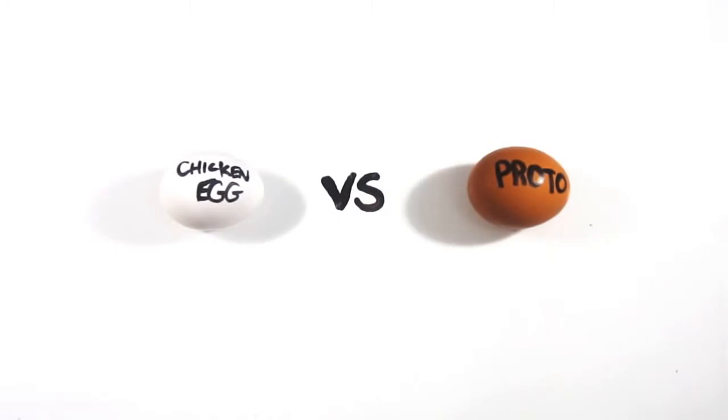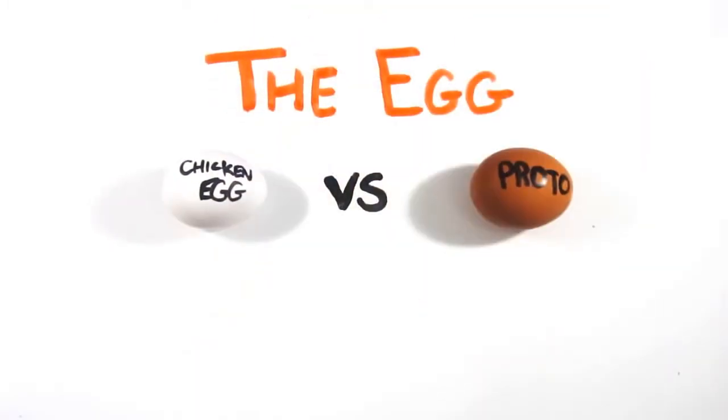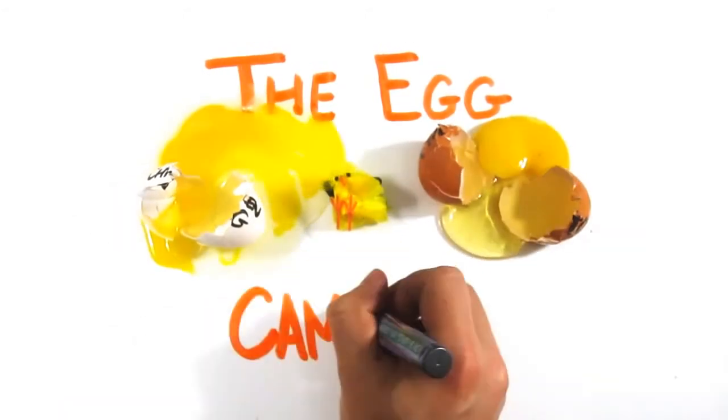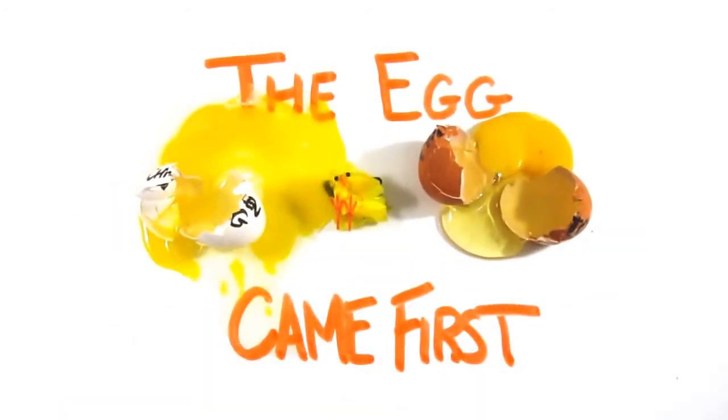Which brings us back to the nomenclature and question of what is a chicken egg, which is a fairly meaningless question. But, at the end of the day, what we can all agree on is that, regardless of whether it was a chicken egg or a proto-chicken egg, the first true chicken came from an egg. The egg came first.